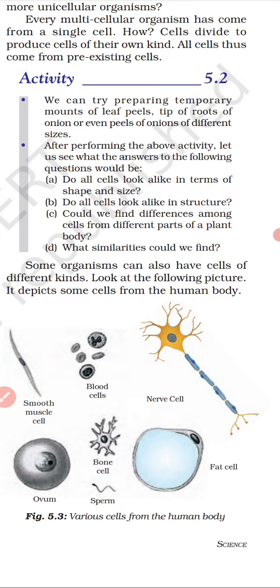Their shape and size depend on the specific function they perform. For example, nerve cells are like telephonic wires because they are the longest cells. Similarly, WBC cells and RBCs don't look alike. Do cells look alike in structure? No, they don't look alike in structure. Again, it depends on the shape and size of the cell and the basic function which they perform.